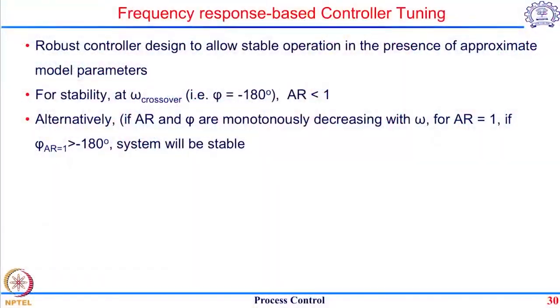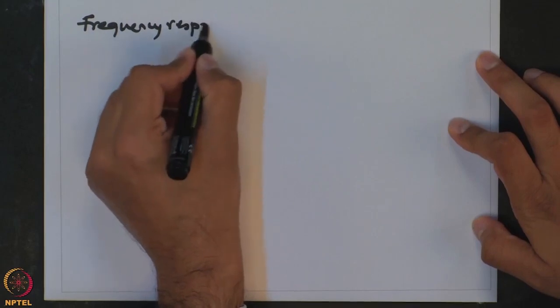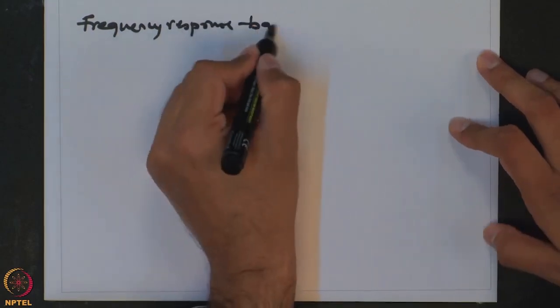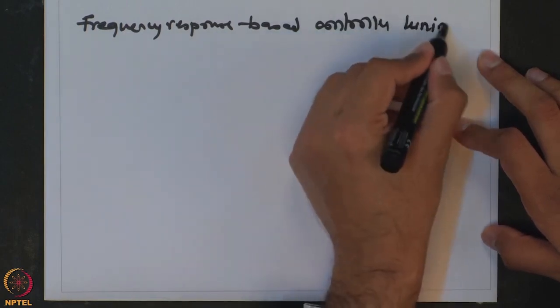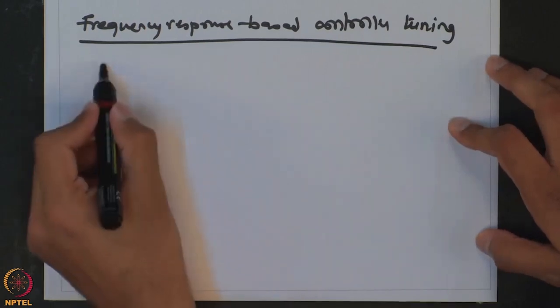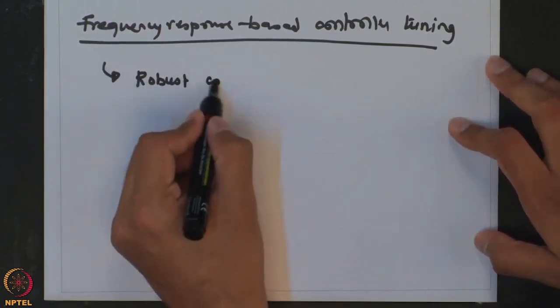Welcome back. We will now look at the final method of controller tuning, and this time we will be talking about a method which falls in the domain of robust control. This will be a method based on frequency response, so we will look at frequency response based controller tuning under the domain of robust control design.